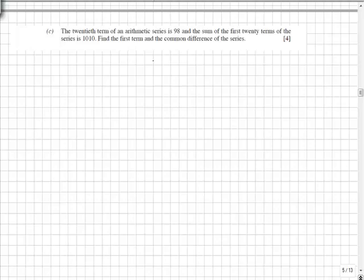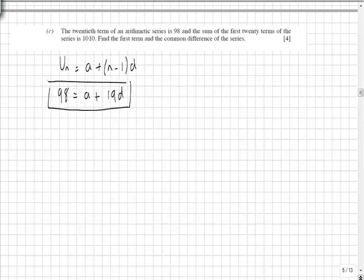In the first instance, the 20th term of the series is 98, so we know that's given by the formula a plus n minus 1d for any particular term. We know the term is valued at 98 and it's the 20th term, so 20 minus 1 is 19 times a common difference. So that's our first formula.